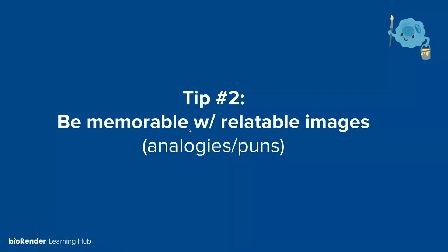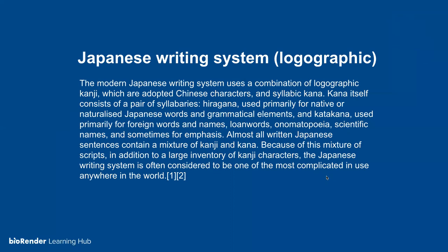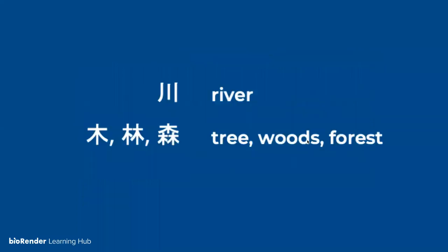Tip number two: be memorable with relatable images. That means try to use more analogies and puns. Use relatable images, and use memes and GIFs sparingly. Japanese is a great example — it's inherently a pictorial or logographic language. If I describe it in words and a paragraph, it's not very impactful and way too many words for a slide. Slim down the content to pictures. The word for river is just three lines that look like a river. The words for tree, woods, and forest are literally one tree, two trees, three trees.